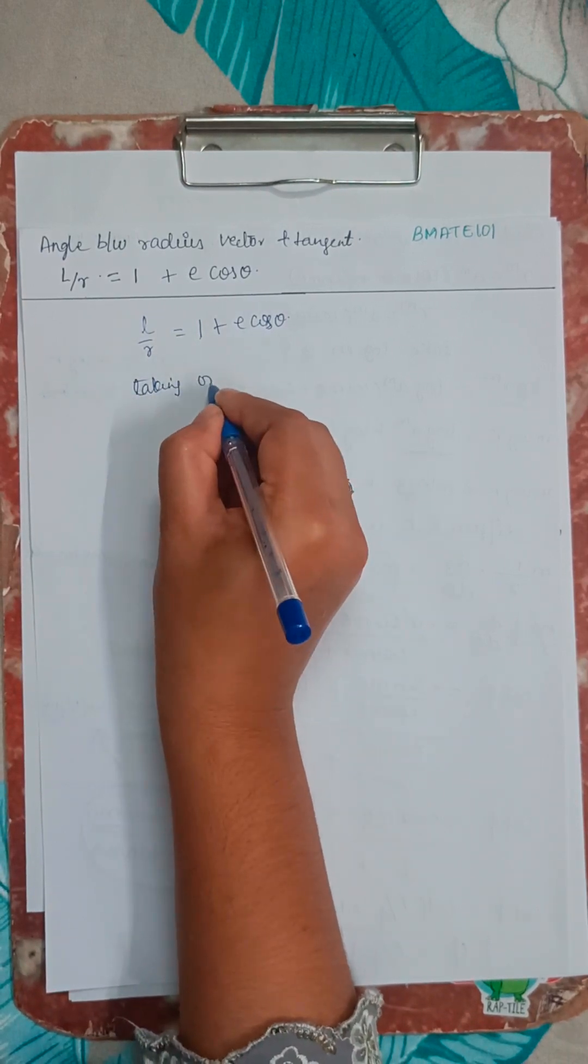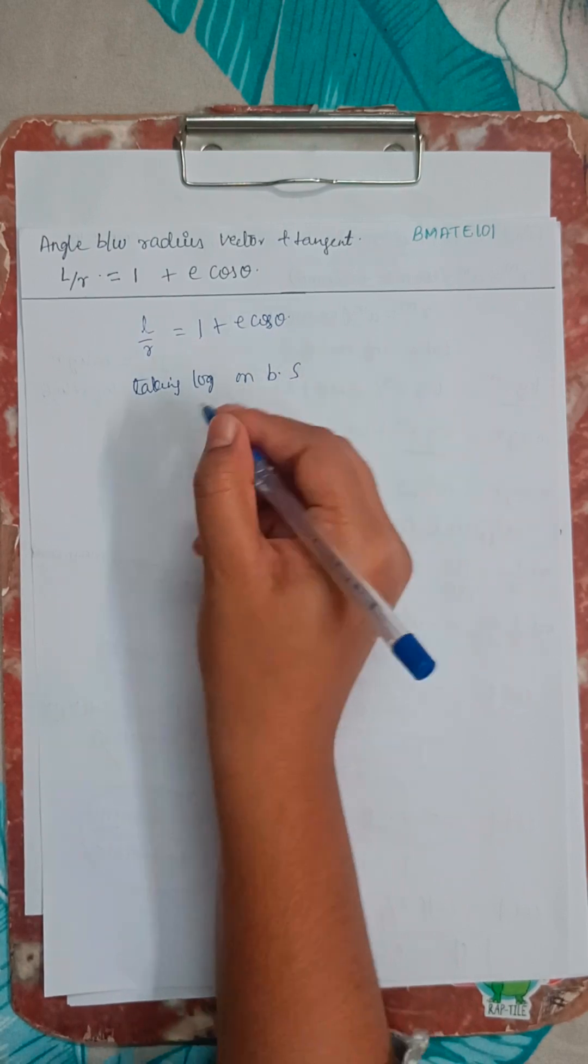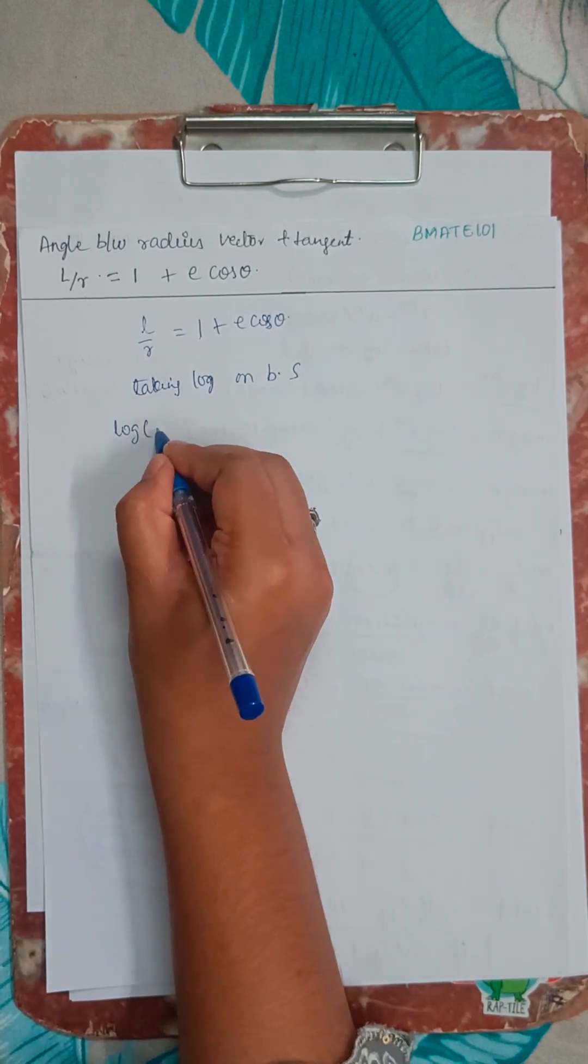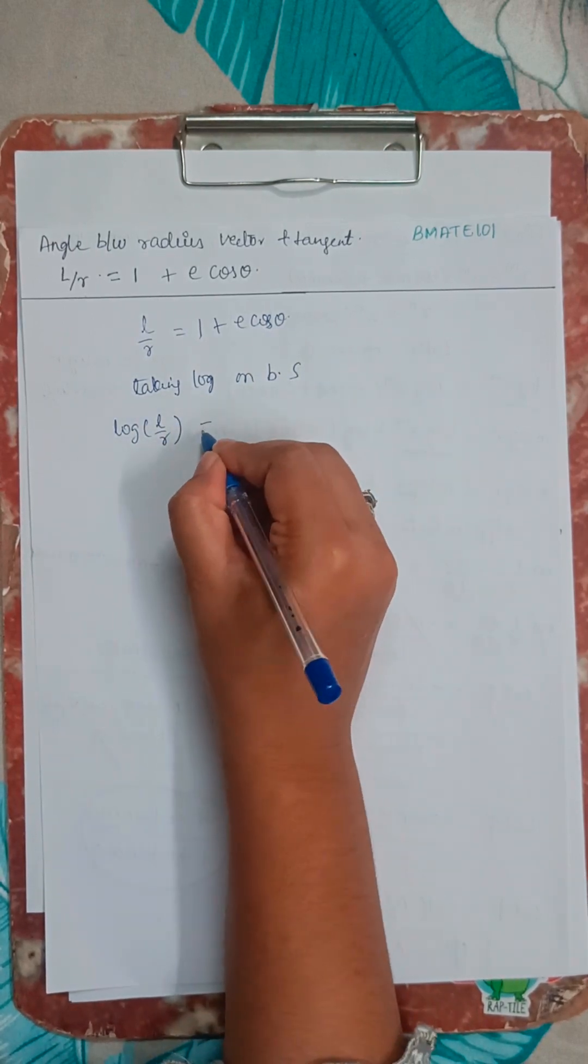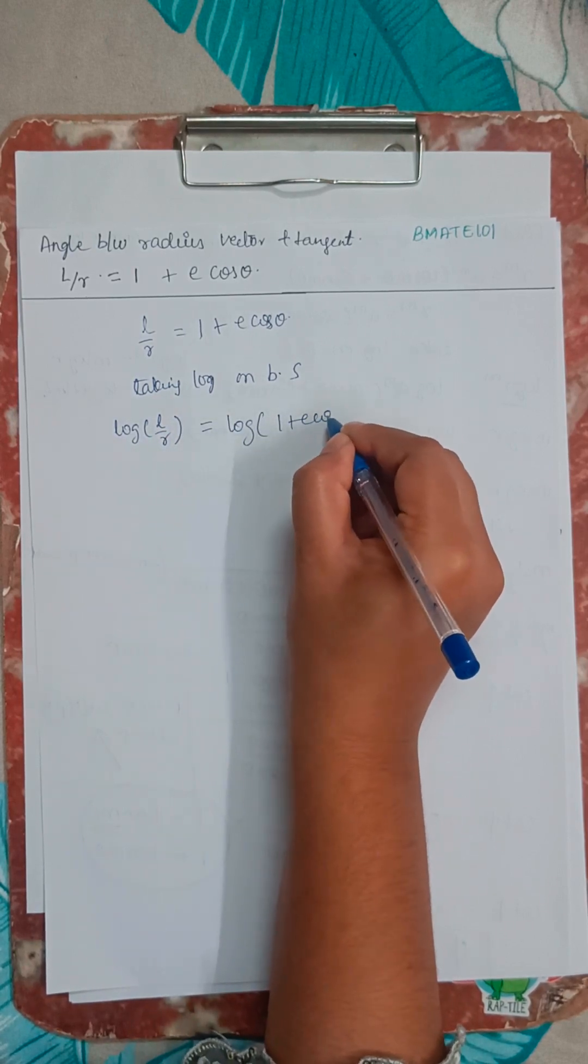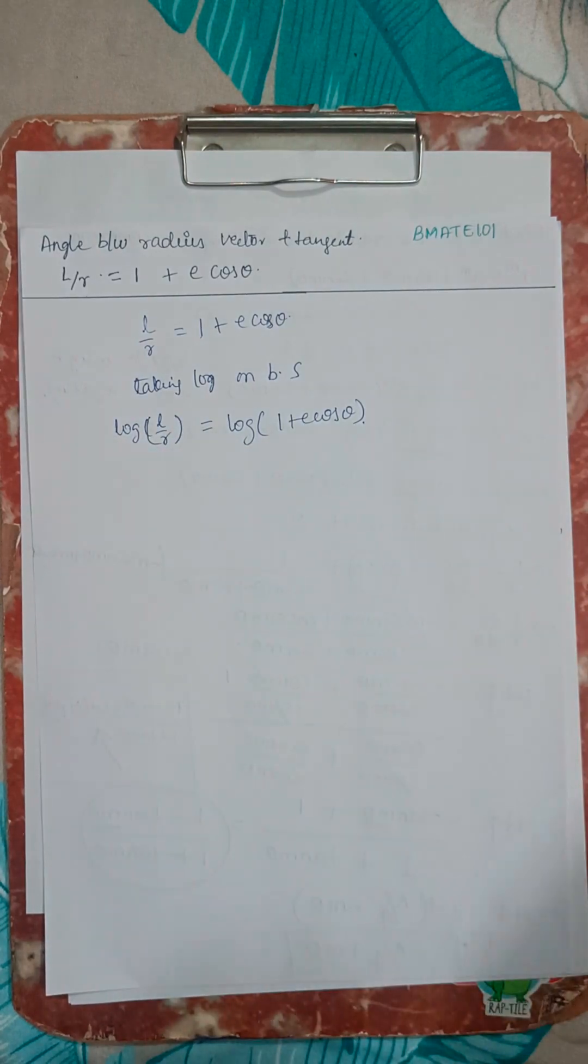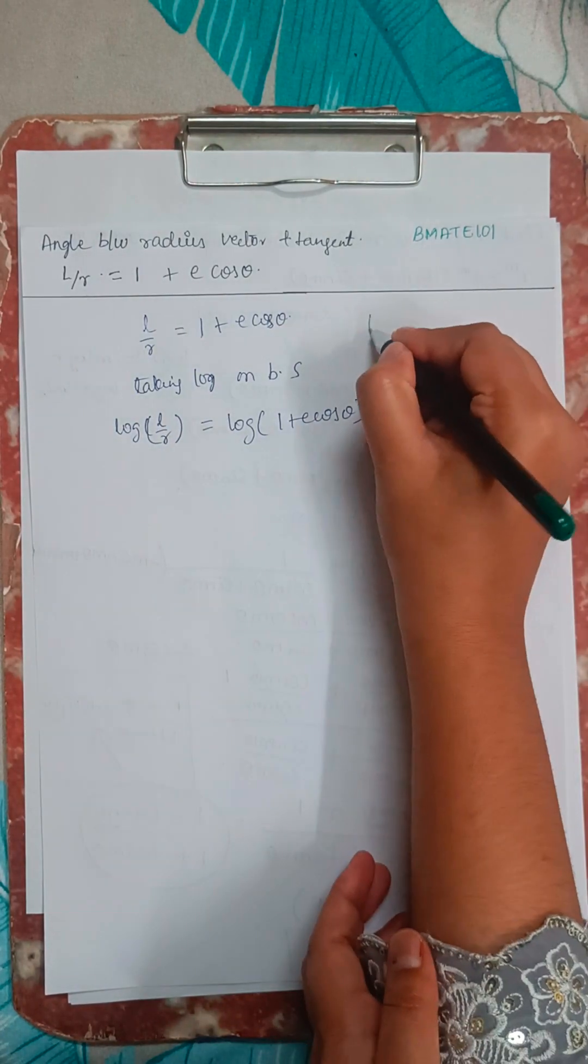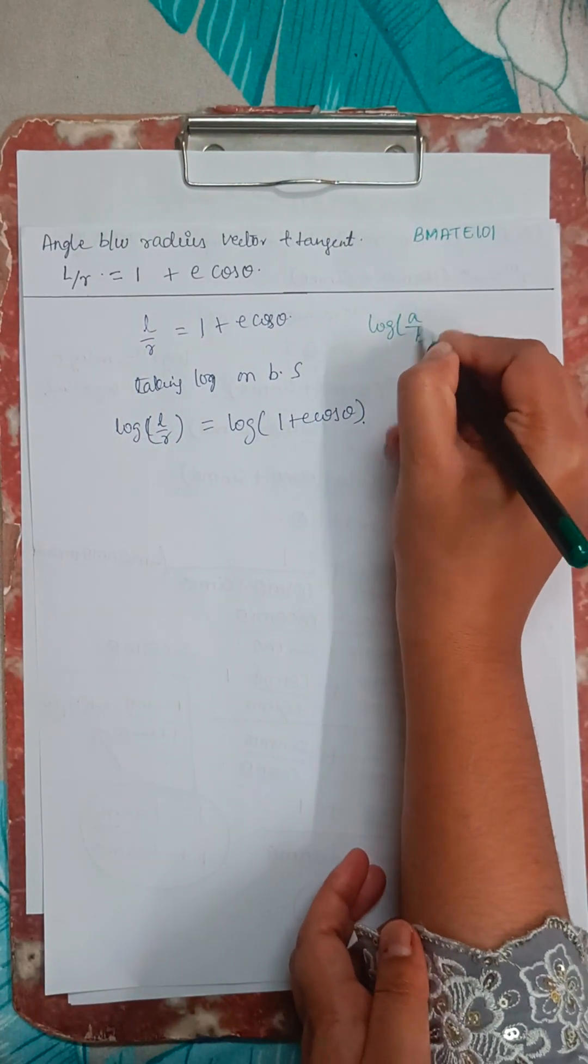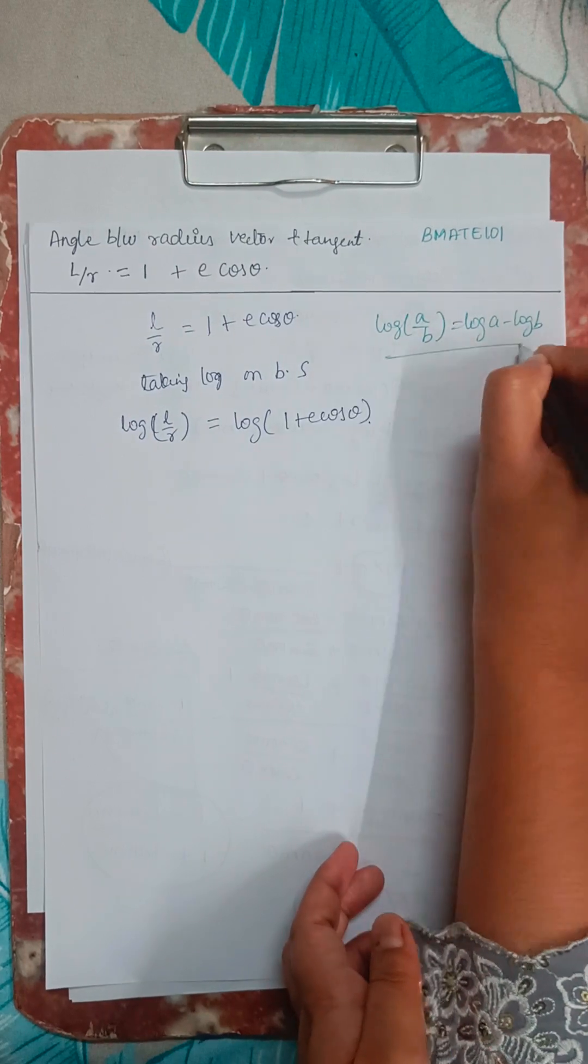Taking log on both sides. Okay, so after taking log on both sides, log of L by R equals log 1 plus A cos theta. So we know this already. Log A by B is nothing but log A minus log B. Correct?